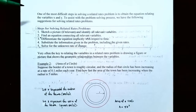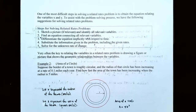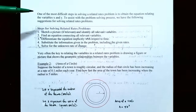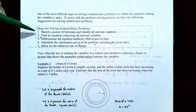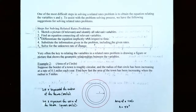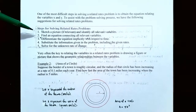Now that we know the basics of related rates problems, let's talk about application problems. One of the most difficult steps is obtaining the equation that relates the variables in the problem. To assist with the problem-solving process, we follow specific steps. Step one: sketch a picture if relevant and identify all relevant variables. Whatever is changing in the problem needs to be represented with a variable, and sketching helps you find the formula relating all variables.